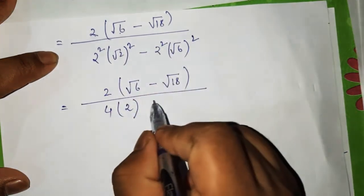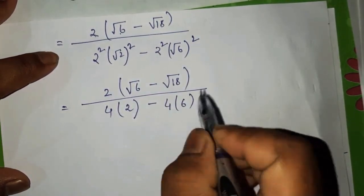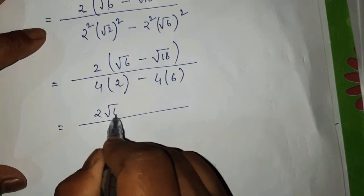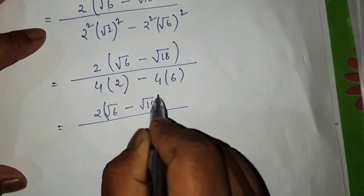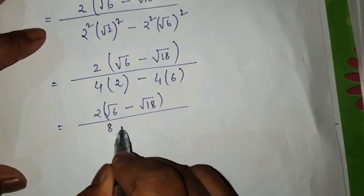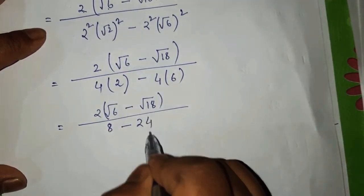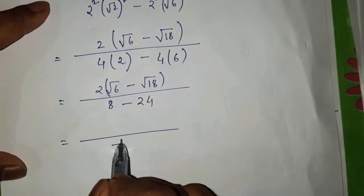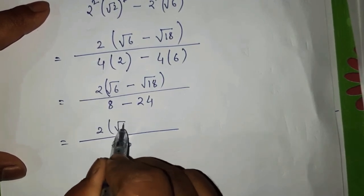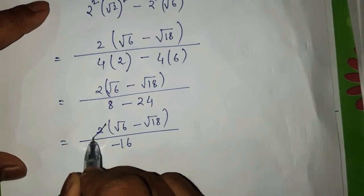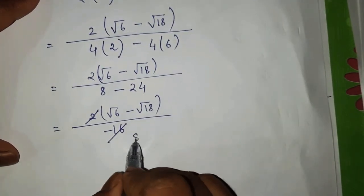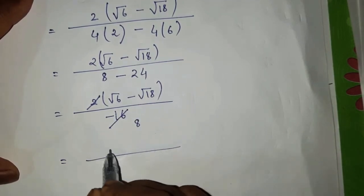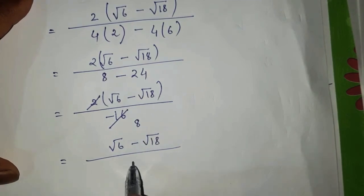We multiply and multiply, we multiply minus, minus 16. 2 times 2 is 4, 2 into 8 is 16. So we have root 6 minus root 18 divided by minus 8.